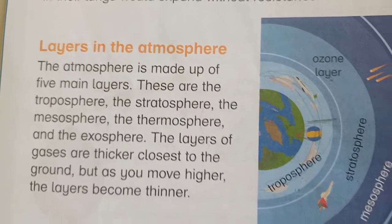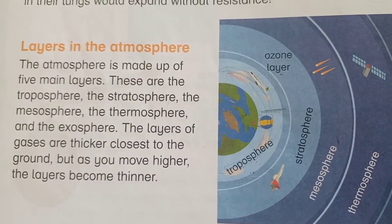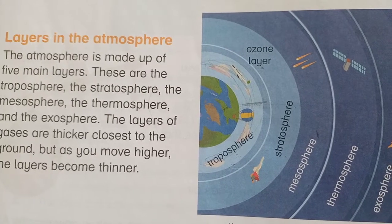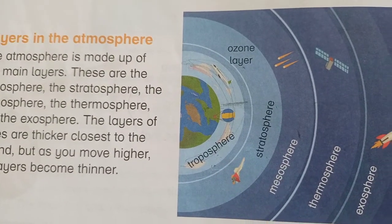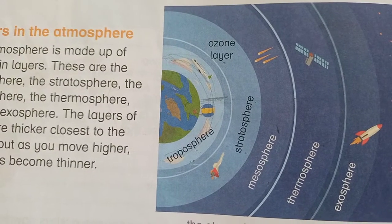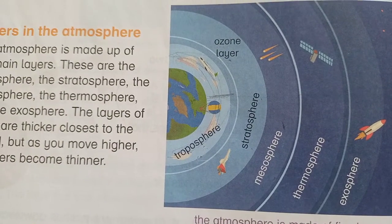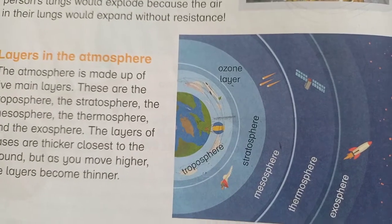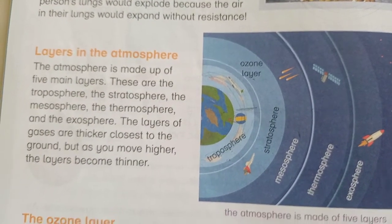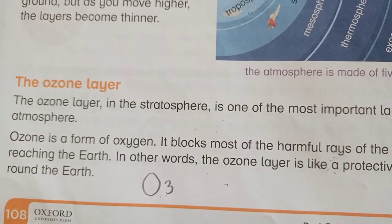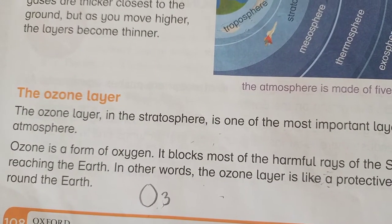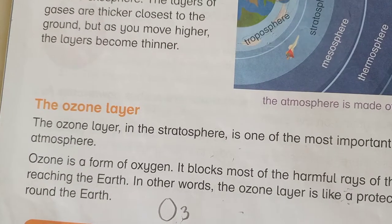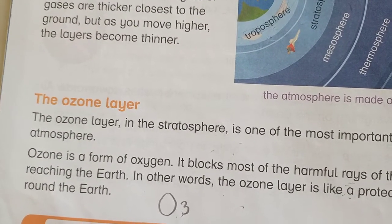We also learned about the layers in the atmosphere. There are 5 layers in the atmosphere: number 1 is the troposphere, second is the stratosphere, then mesosphere, thermosphere, and exosphere. We also learned about the ozone layer — the ozone layer is a layer which protects us from the harmful rays of the sun.